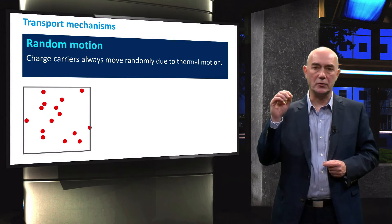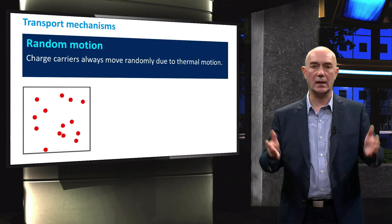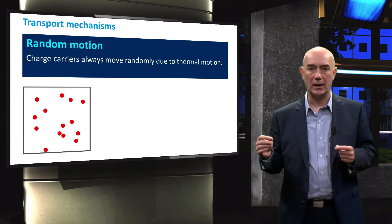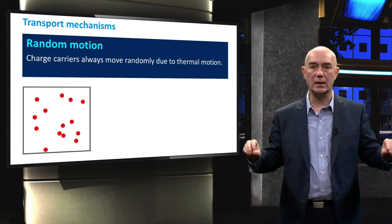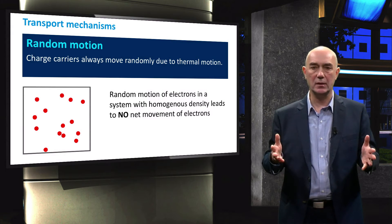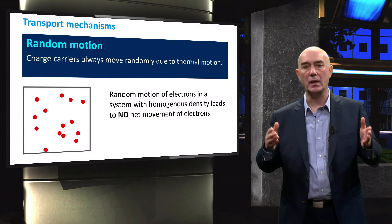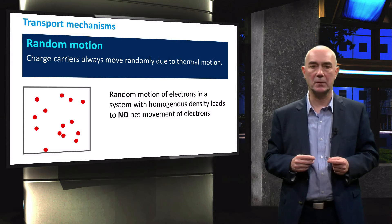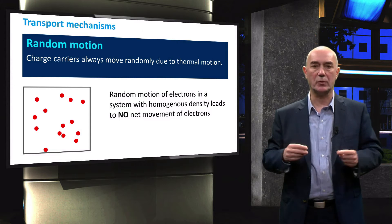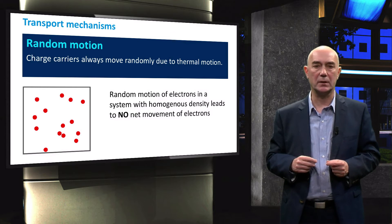Let's look at some of the mechanisms behind individual charge carrier transport in semiconductors. First, we have to consider thermal motion. Electrons are able to move as a result of thermal excitation. However, this movement is random and equally distributed throughout the whole semiconductor. Once a semiconductor reaches thermal equilibrium, we are not able to observe a net charge transport even though individual charges are moving due to thermal motion. Since current is the result of a net transport of electrons, random motion is not of interest for photovoltaic applications.